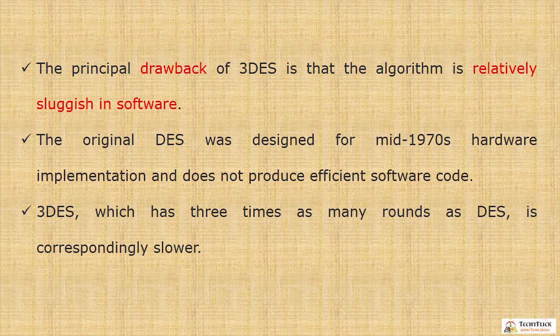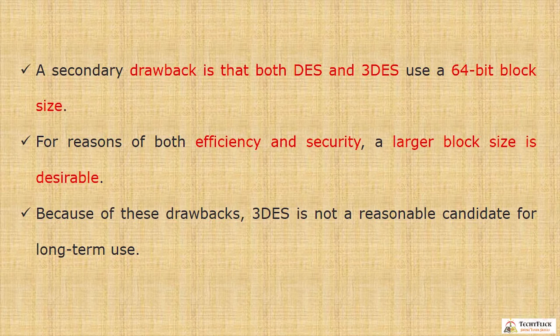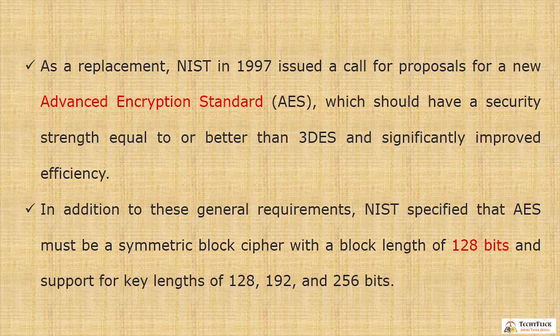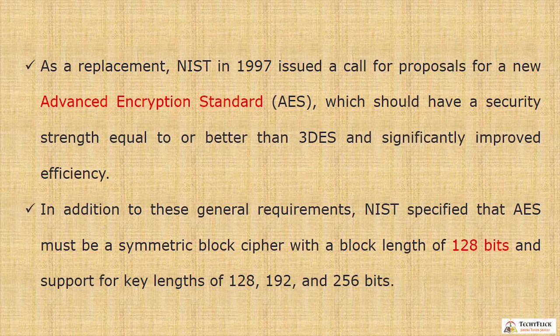Triple DES has three times as many rounds as DES and is correspondingly slower. A secondary drawback is that both DES and Triple DES use a 64-bit block size. For reasons of both efficiency and security, a larger block size is desirable. Because of these drawbacks, Triple DES is not a reasonable candidate for long-term use. As a replacement, NIST in 1997 issued a call for proposals for a new Advanced Encryption Standard, which should have security strength equal to or better than Triple DES with significantly improved efficiency.